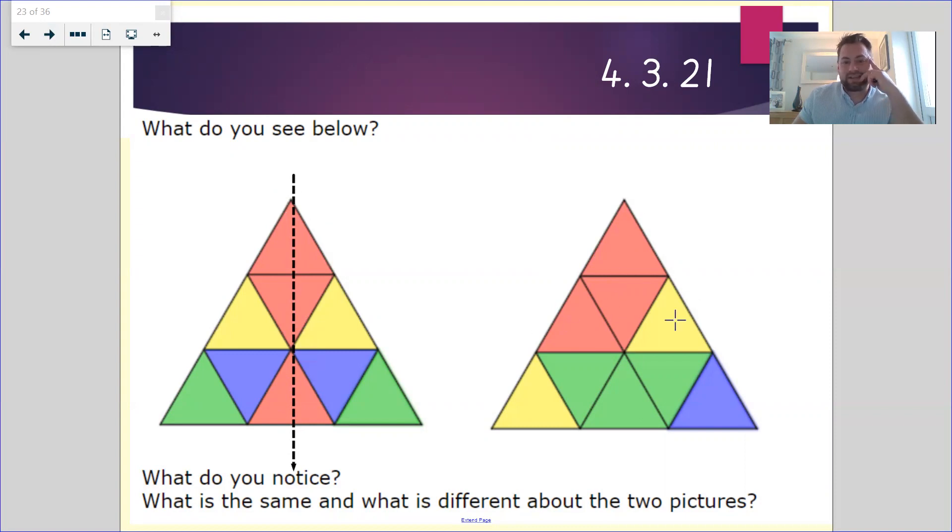This one, we've got three red triangles colored in, two of them are yellow. Only one of them is blue. But if we put our line of symmetry down here, is this side the same as this side? No, it's not. So there are some similarities and there are some differences.